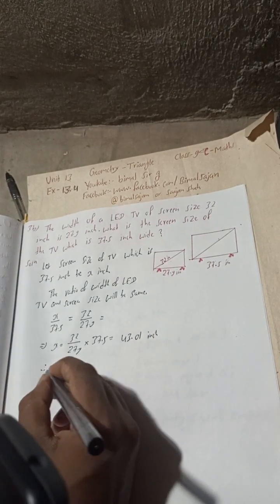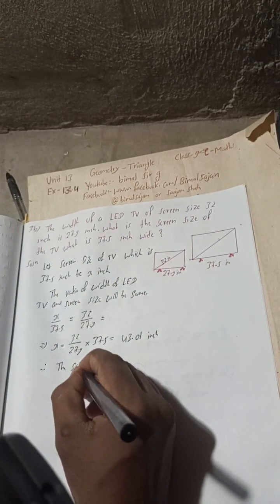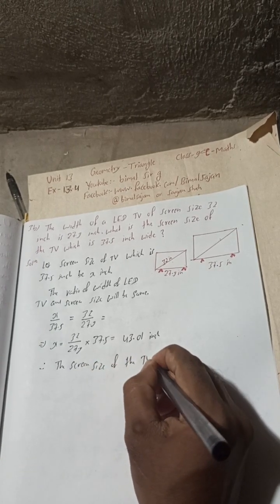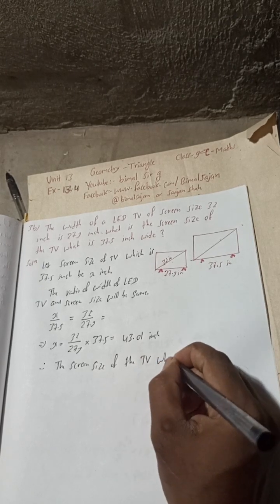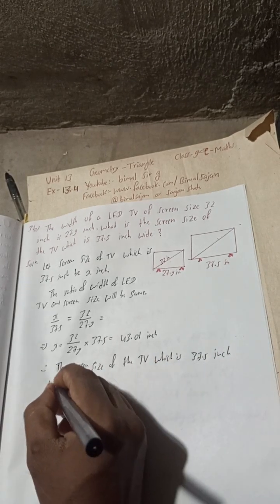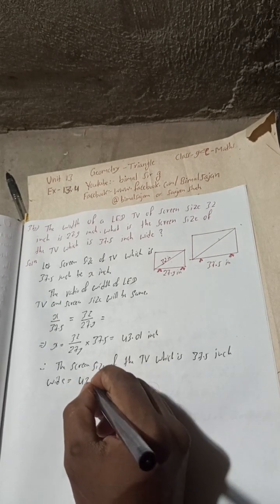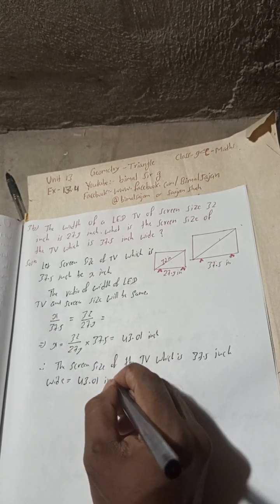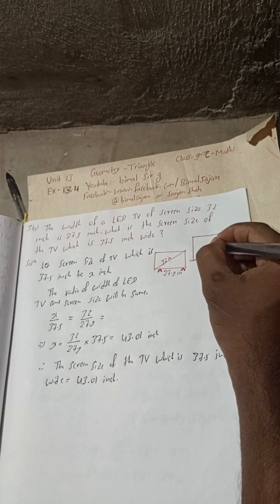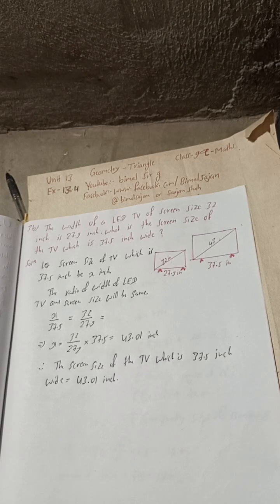Therefore, the screen size of the TV which is 37.5 inch wide is equal to 43.01 inch. This is a 43 inch TV. This is the complete solution.